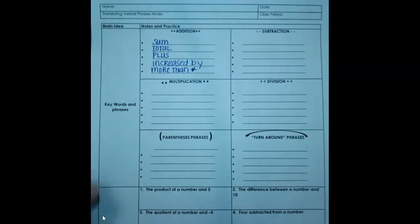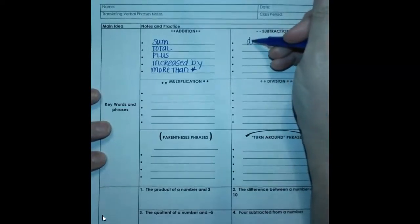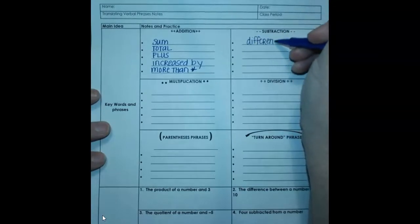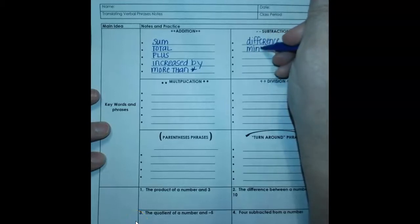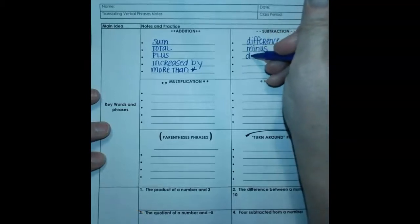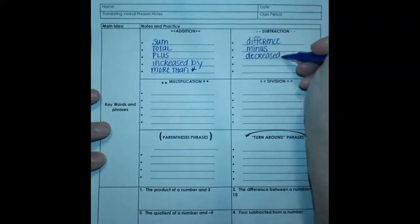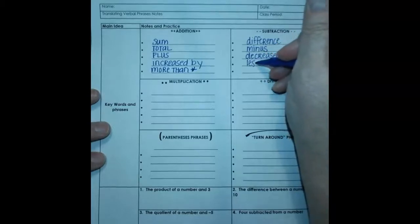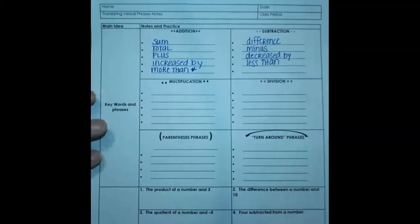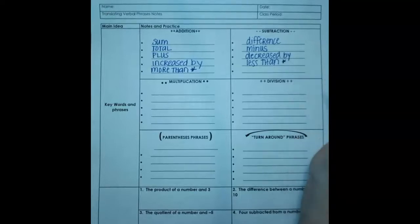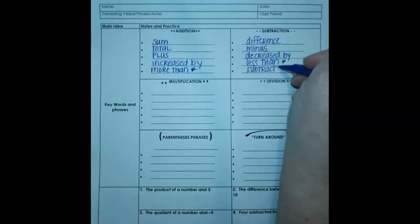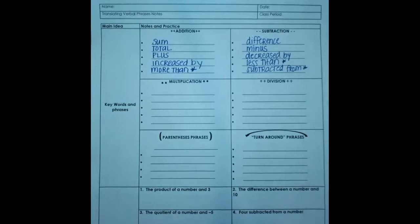So let's look at some of our subtraction words. Often you'll see the word difference, meaning subtract the two terms, minus, decreased by, less than. Now that sounds like we're talking about an inequality and we talk about those later, but it's phrased slightly different. So just less than means you're subtracting. We're going to put a star by this one too, because he's important. And the last one I want to have on our list is subtracted from. He also gets a star. These are some important words we're going to discuss in just a minute.